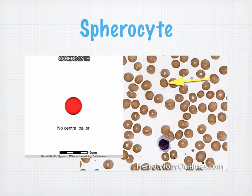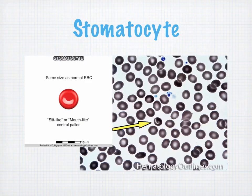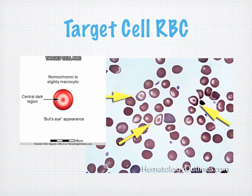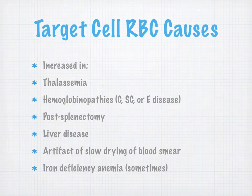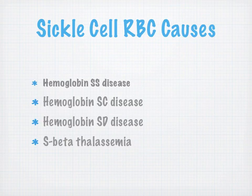Spherocytes are RBCs with no central pallor — caused by nothing good. Stomatocytes are named for their mouth-like appearance with a slit-like or mouth-like central pallor. Target cells have a bullseye appearance and can be an artifact of slow-drying blood — you'll likely see these in lab as an artifact. Sickle cells look exactly like a sickle, crescent, or banana, and are increased in sickle cell anemia and beta thalassemia.